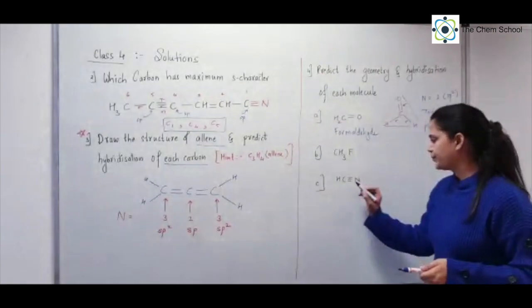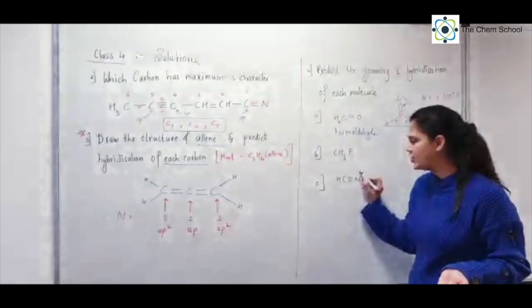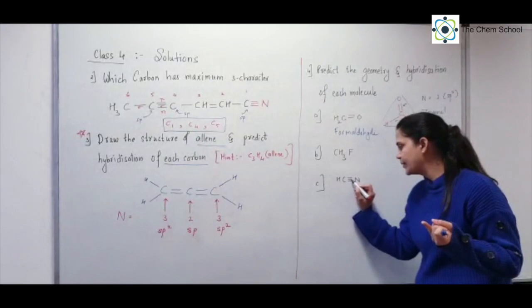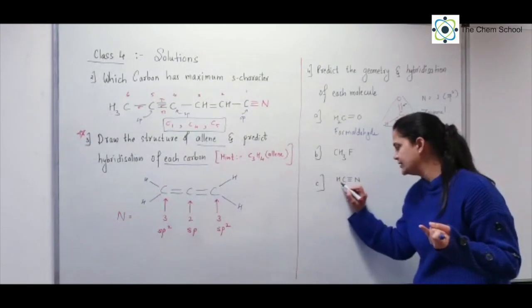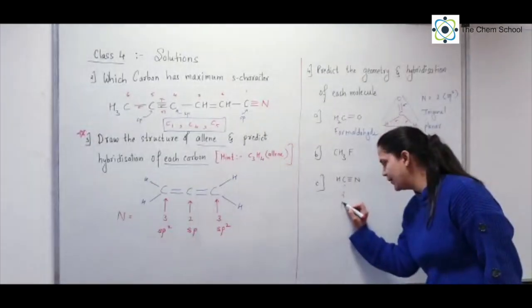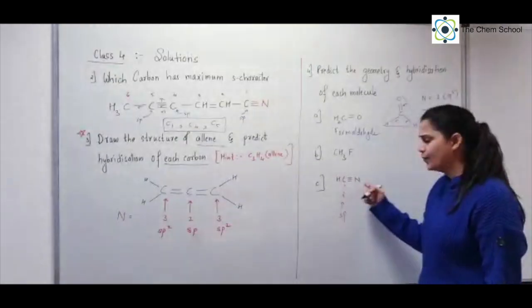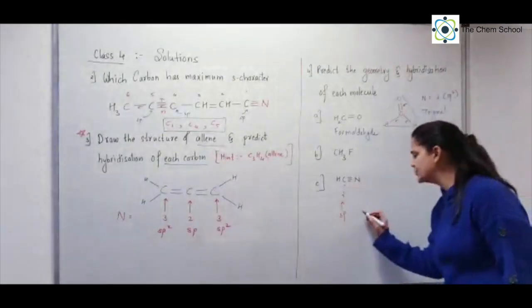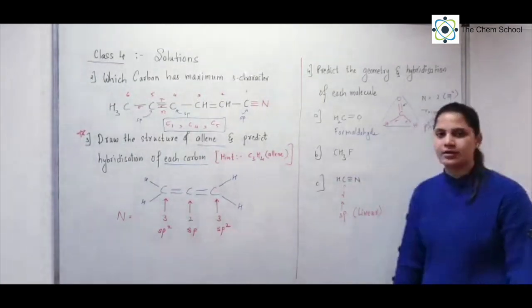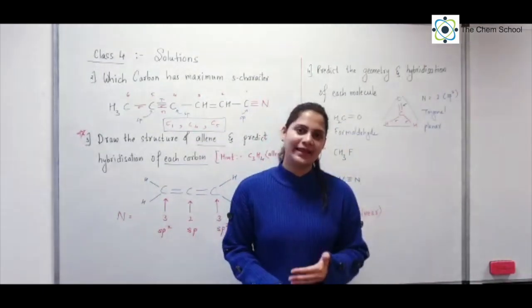For the last molecule, we have one carbon with a triple bond. It has only 2 sigma bonds, so hybridization is sp. When hybridization is sp, the geometry of the molecule is linear. I hope these questions are now clear. See you soon in the next class. Thank you.